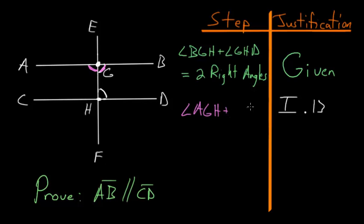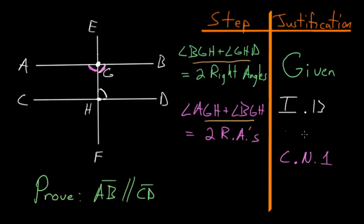And then using Common Notion number one, which says that things which are equal to the same thing are equal to each other, since these two angles and these two angles both add up to two right angles, we know they have to be equal to each other. So let's write that down.